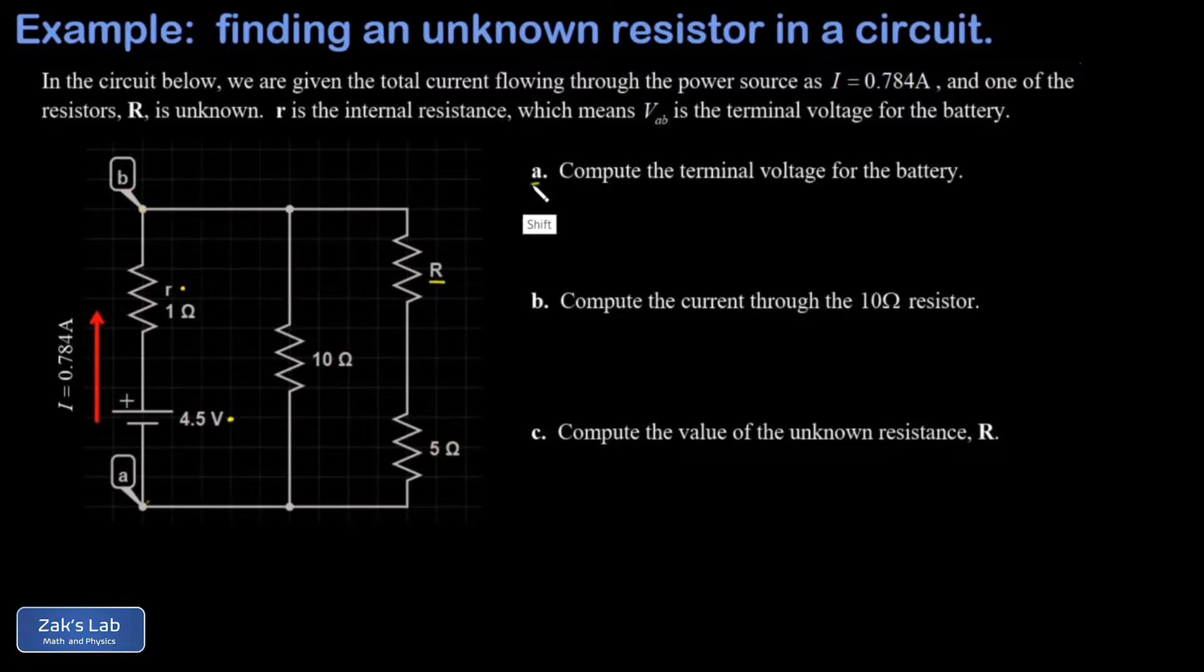So in part A, that's what we're finding. In part B, we'll find the current through the central branch of the circuit, and then in part C, we'll finally compute this unknown resistance.